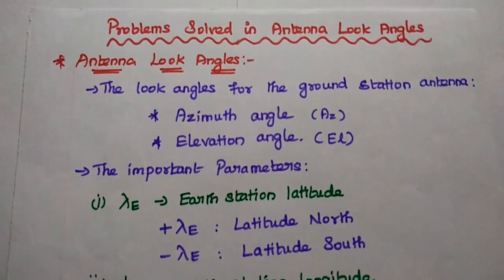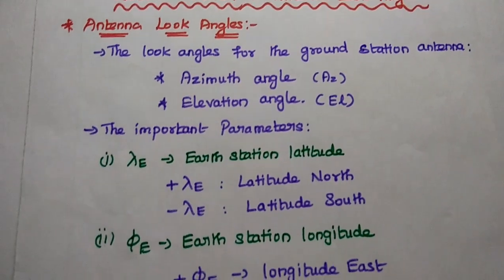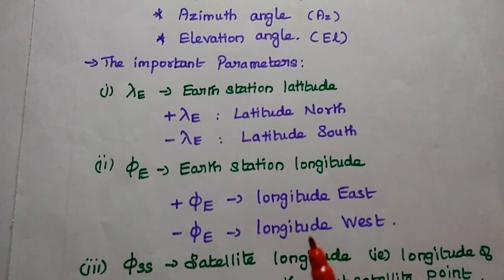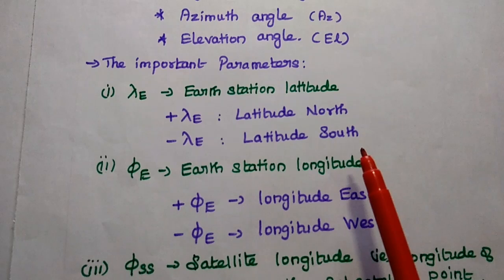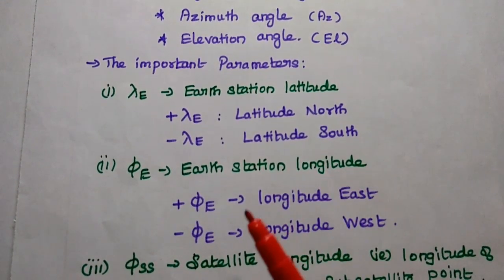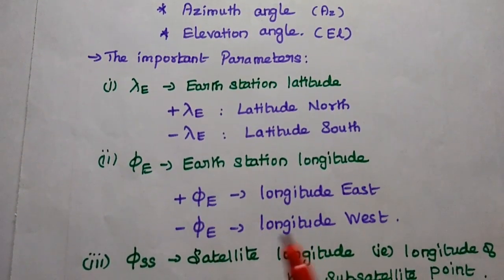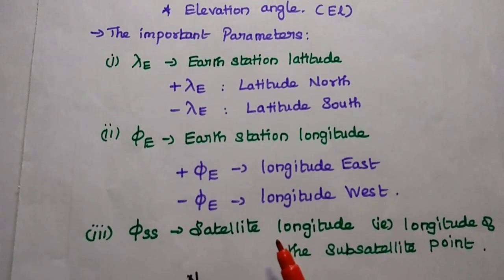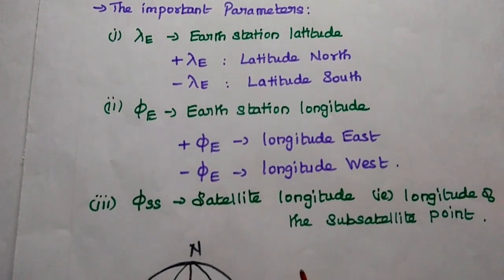These two angles are very important for the ground station antenna to point towards the satellite. Here we consider three important parameters. The first one is lambda_e, that is earth station latitude. Its value is positive for latitude north and negative for latitude south. The next one is phi_e, that is earth station longitude. Its value is positive for longitude east and negative for longitude west.